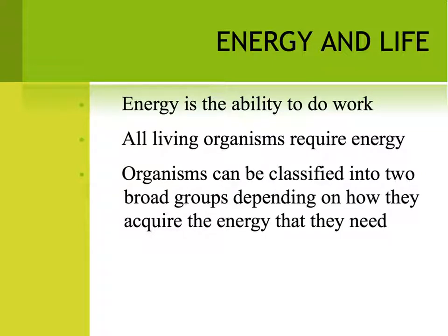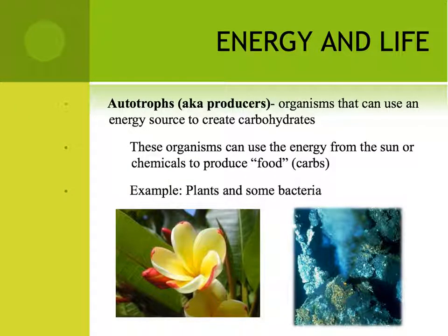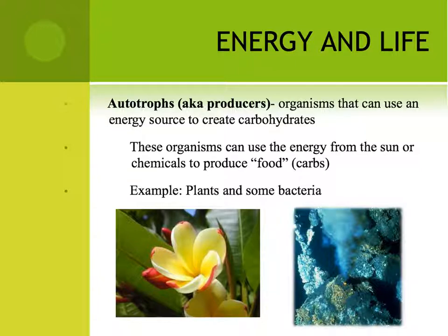We're going to begin our discussion on how organisms can be classified based on their energy requirements. The first category is organisms that can make their own food. We refer to them as autotrophs — 'troph' basically means energy and 'auto' means self. We also refer to them as producers, and they make their own food in one of two ways: photosynthesis, which is using light energy to create chemical energy, or chemosynthesis, where organisms use chemicals to make food — like the bacteria in hydrothermal vents that use hydrogen sulfides to make food for themselves.